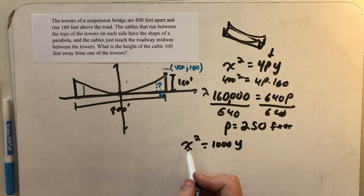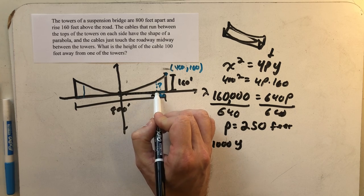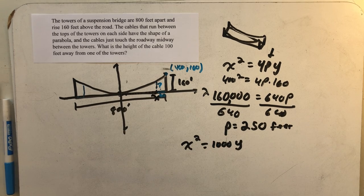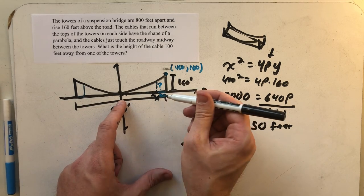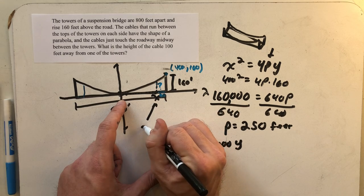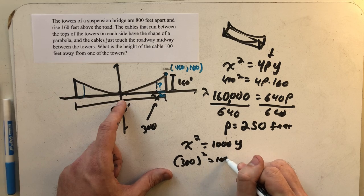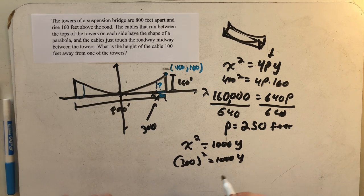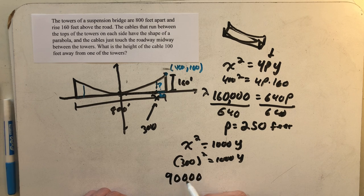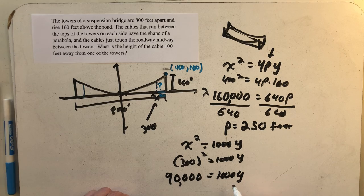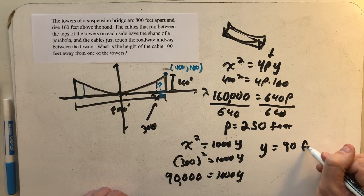If I knew an x value, I could find the y value. And that's really what I'm after. If I knew this particular x value, I could find the height of that cable, the associated y value. Well, this total distance over is 400. The point here is 100 units away from the tower. So 90,000. So 90,000 dividing by 1000 tells me that y is equal to 90 feet.